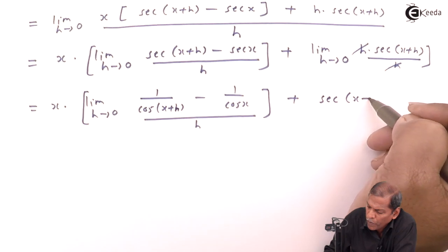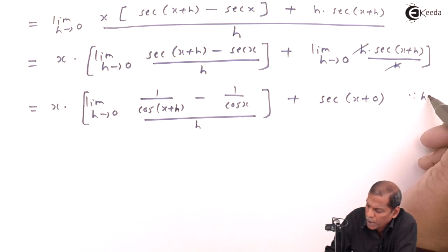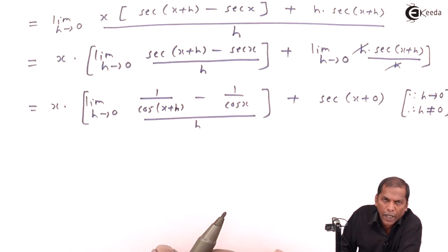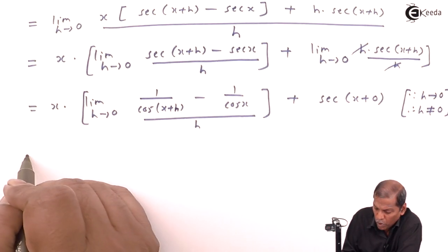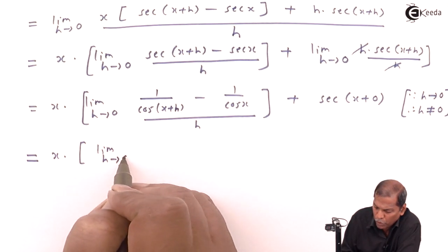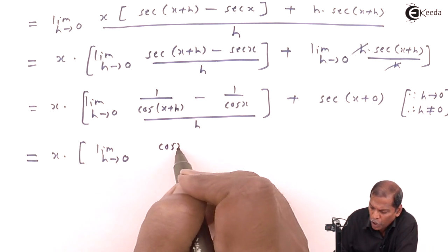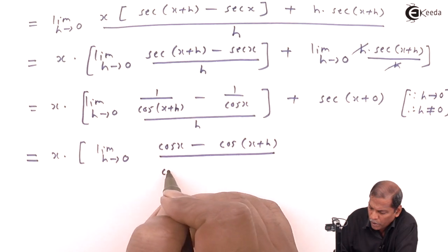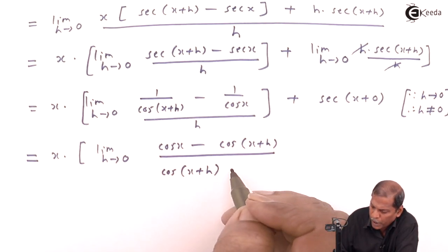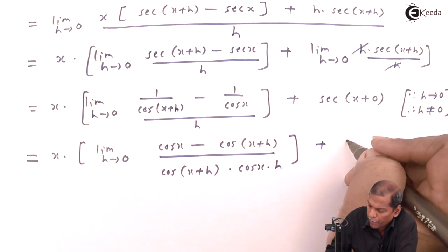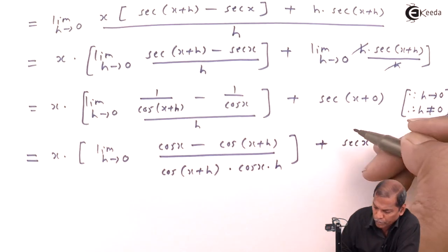So we get sec(x+0) = sec(x) for the second term, since h tends to 0 and h ≠ 0, so we can cancel h. For the first limit, on cross-multiplying we get [cos(x) minus cos(x+h)] divided by cos(x+h)·cos(x)·h, plus the remaining term sec(x).